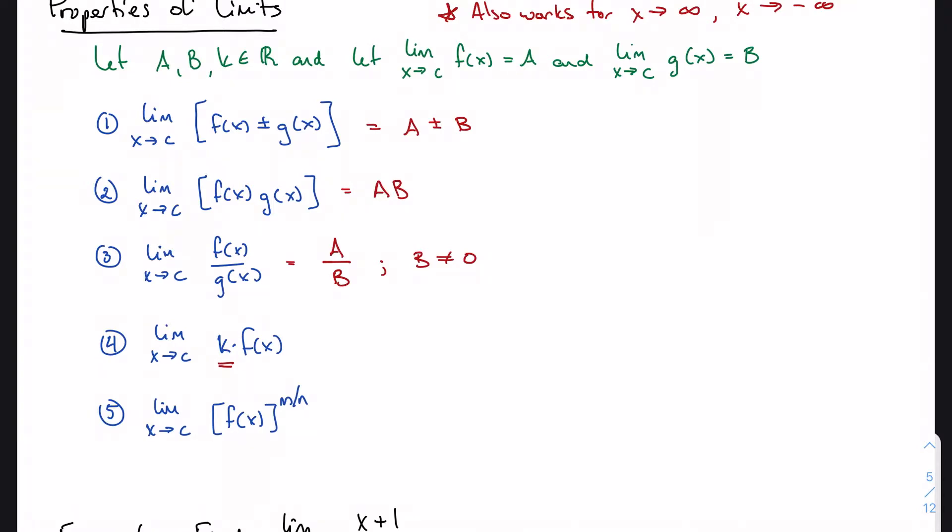we also have the option to pull that out front. So I can just take the limit of the function and multiply that by k later on. No different than I have above, right? I've just taken the operation and pulled it outside instead.